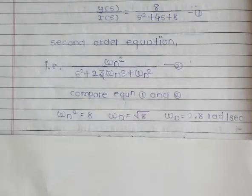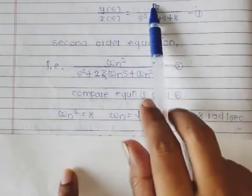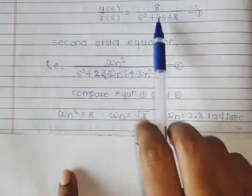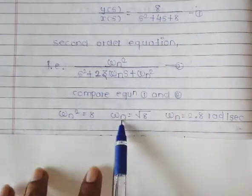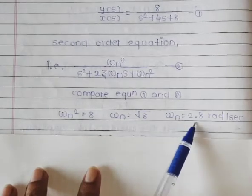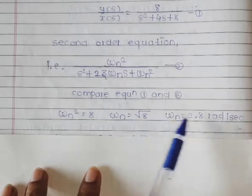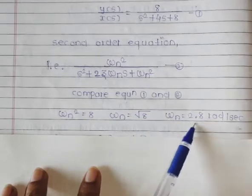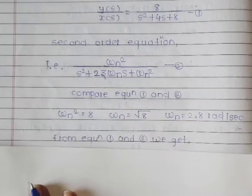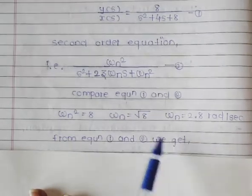Comparing the equations, where ωn² corresponds to 8, we get ωn² = 8. Therefore ωn = √8, which gives ωn = 2.8 radians per second. So our natural frequency ωn comes out to be 2.8 rad/s.